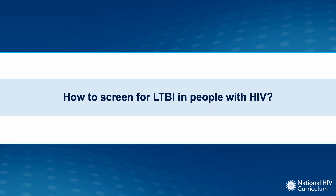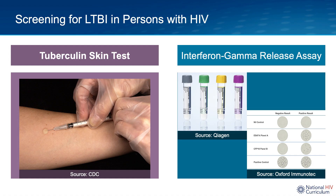Now let's review our diagnostic toolkit to detect LTBI in people with HIV. There are two main methods: the tuberculin skin test, which I will refer to as TST, and the interferon gamma release assay, also referred to as IGRA. The TST entails giving the patient an intradermal injection of tuberculous mycobacterial antigens and then evaluating the cutaneous induration 48 to 72 hours later. The intradermal antigens stimulate a T-cell mediated type 4 delayed hypersensitivity reaction in persons with either active or latent TB infection, which causes the induration.